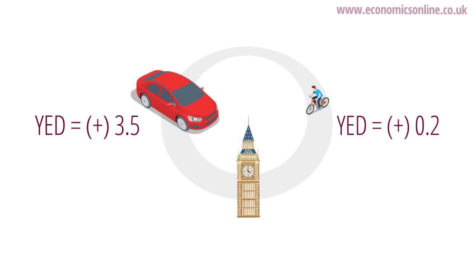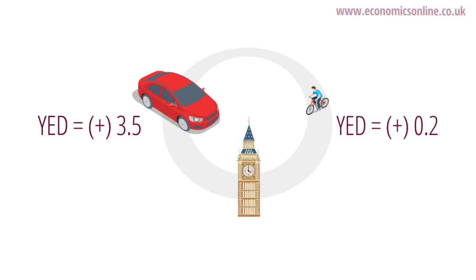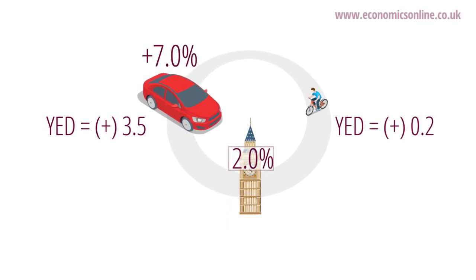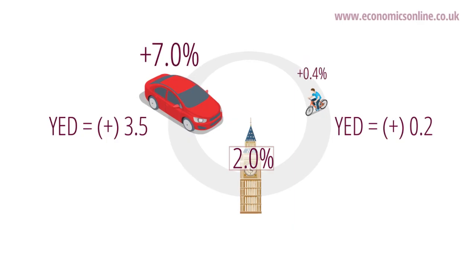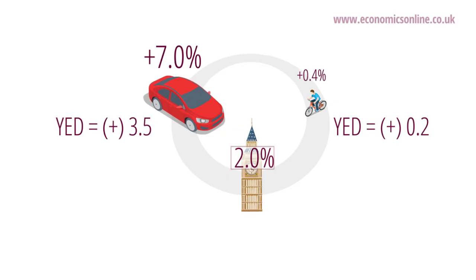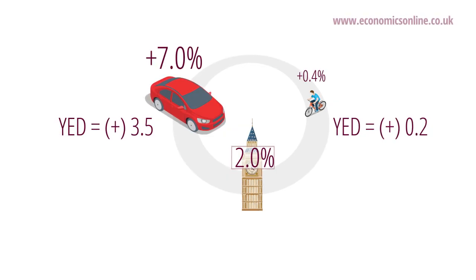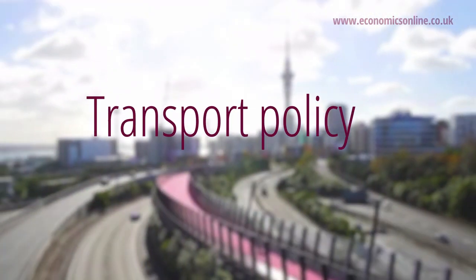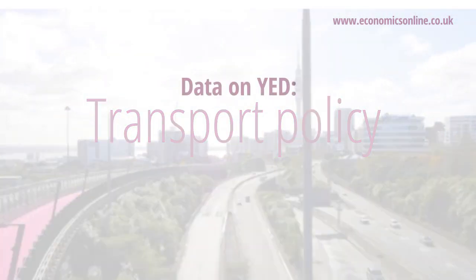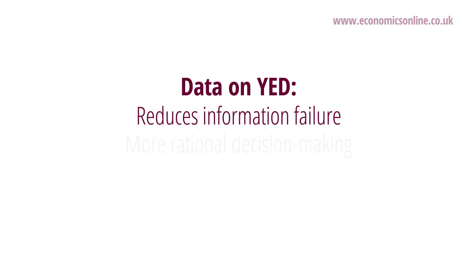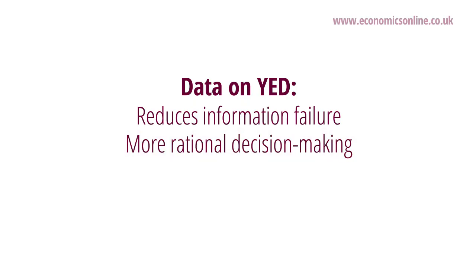Using these figures, we can predict that an increase in a country's income of 2% will lead to a 7% increase in demand for motor vehicles and just a 0.4% increase in demand for cycles. This information, along with YED data for a whole range of transport forms, can help shape a government's transport policy. Clearly, information on YED is very useful in that it helps solve the problem of information failure and enables firms and governments to make more rational decisions about the best way to allocate scarce resources to competing uses.